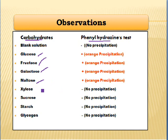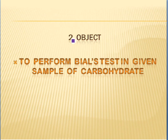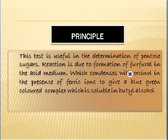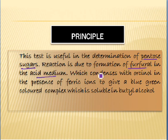The next experiment is the Bial's test for a carbohydrate solution. The principle is that this test is useful in the determination of pentose sugars. The reaction is due to the formation of furfural in the acidic medium, which condenses with orcinol in the presence of ferric iron to form a blue-green color that is insoluble in butyl alcohol.